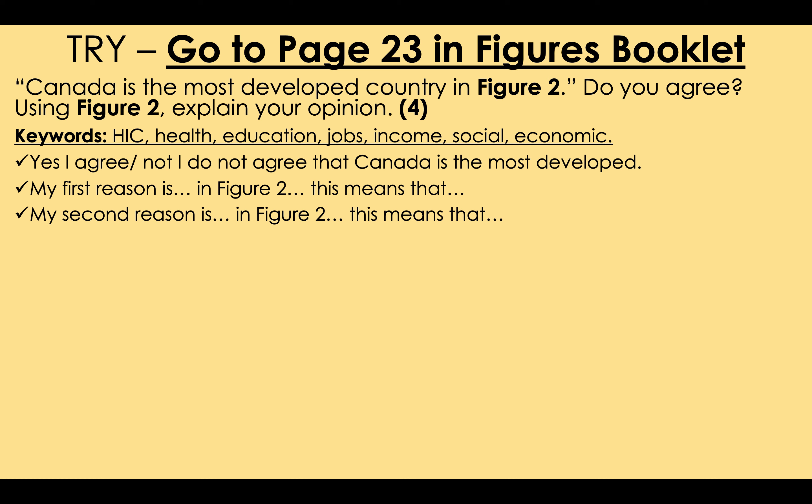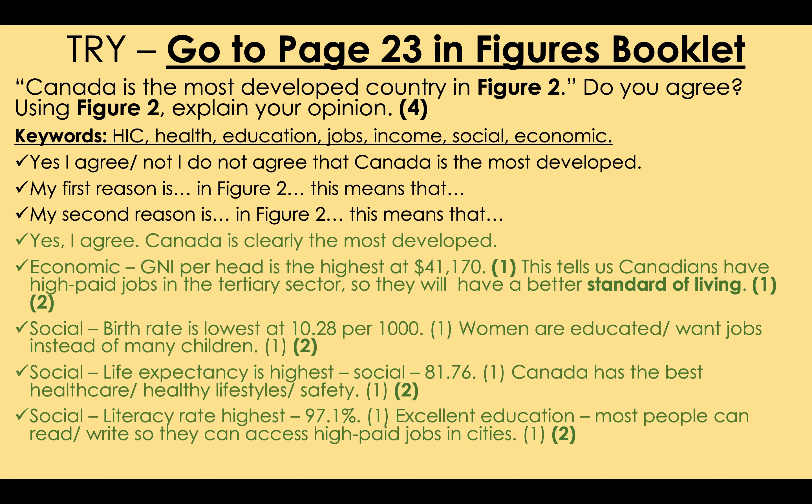For this task you would need the booklet, but instead consider this question: a country with the highest life expectancy, GDP per capita, and literacy rate is the most developed country. Explain what it tells you about a country if it has a high life expectancy, literacy rate, and GDP per capita — what does it tell you about the kinds of jobs, health care, and education in the country? Take some time to answer that question, then look at the answers in green and compare. Your explanations should have been similar, even if your exact figures differ.